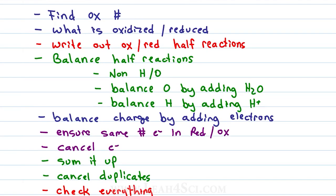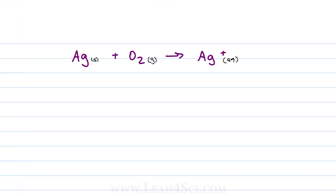Say you're told to balance the following equation that takes place in acid: Ag solid plus O2 gas gives you Ag+ aqueous. Remember that in an acidic solution, we expect to have an excess of H+ but we also expect to have water because the acid is dissolved in water. Taking that into consideration, let's begin.